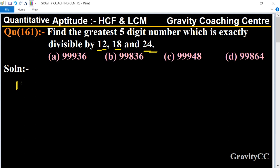12 equals its prime factor 2² × 3, and 18 equals 2 × 3², and 24 equals 2³ × 3.